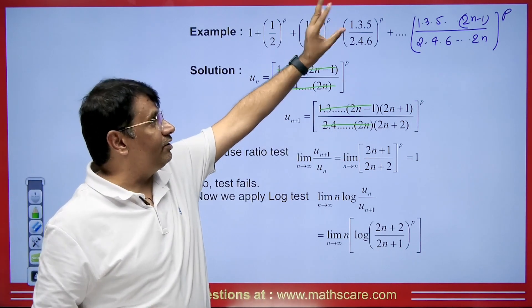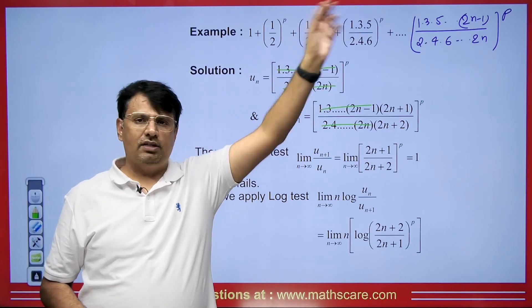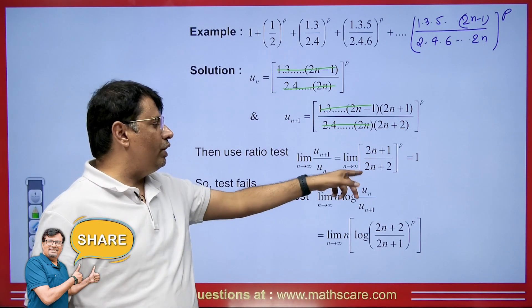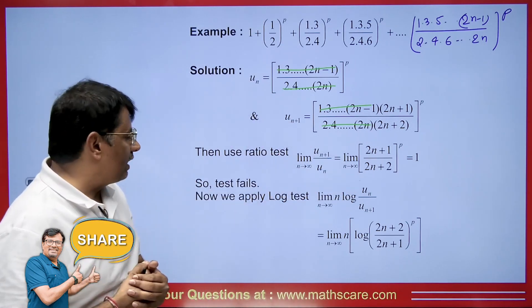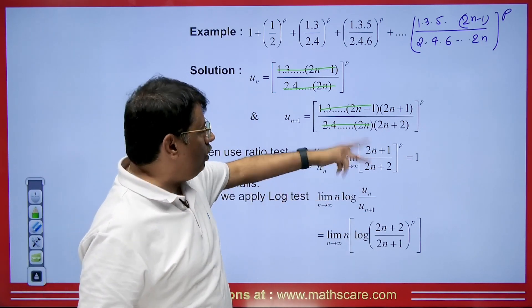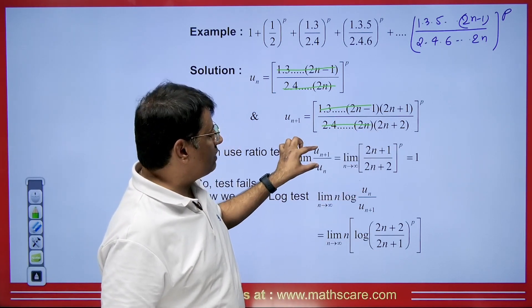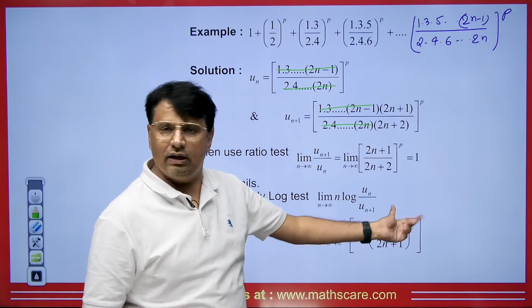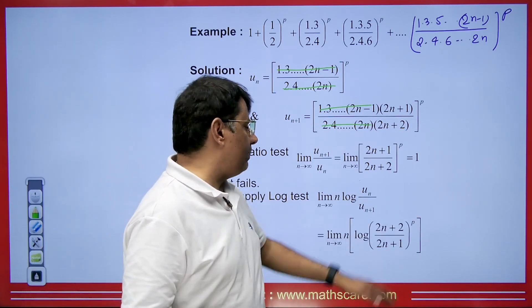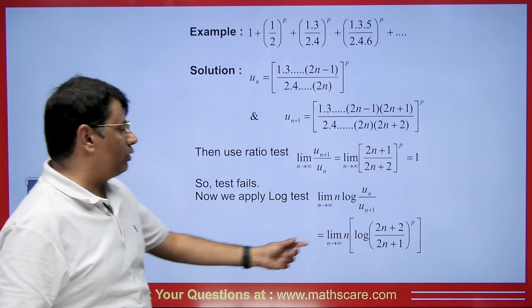Whenever we have any nth term with a power like this, we use the log test; otherwise, we use the Raabe test. You can check out the Raabe test video on the i-button. So limit n→∞, we will find the value of n·log(U_n / U_{n+1}). This comes as n·log of U_n/U_{n+1} — we have U_{n+1}/U_n already, so we just take its inverse and apply log. When you simplify this, you do log(a/b) = log a − log b, and we take p as common since the power of log is p.